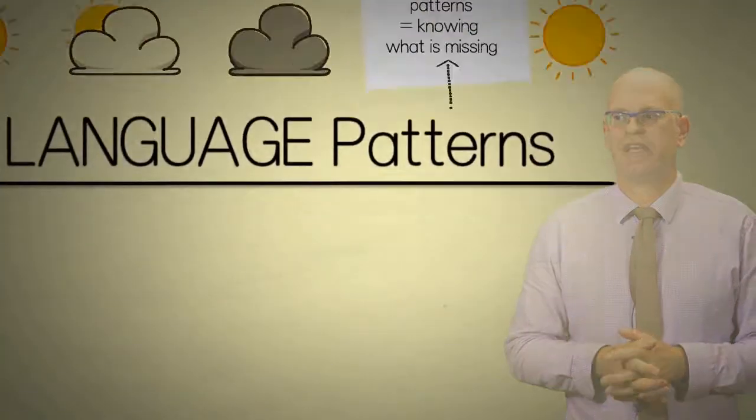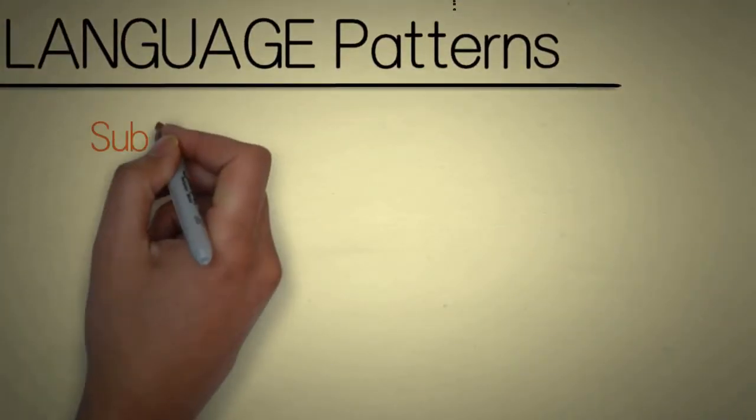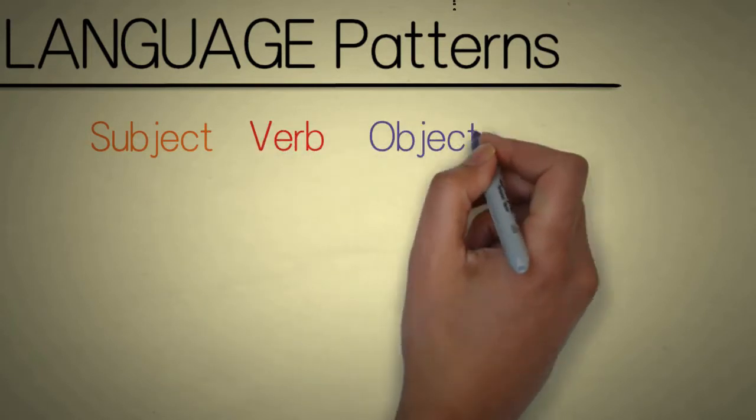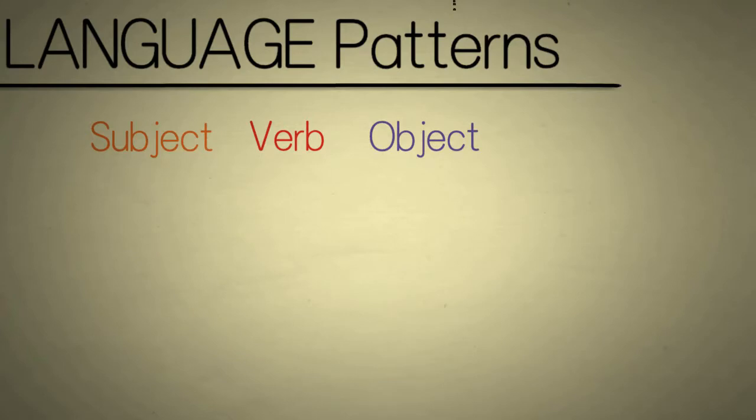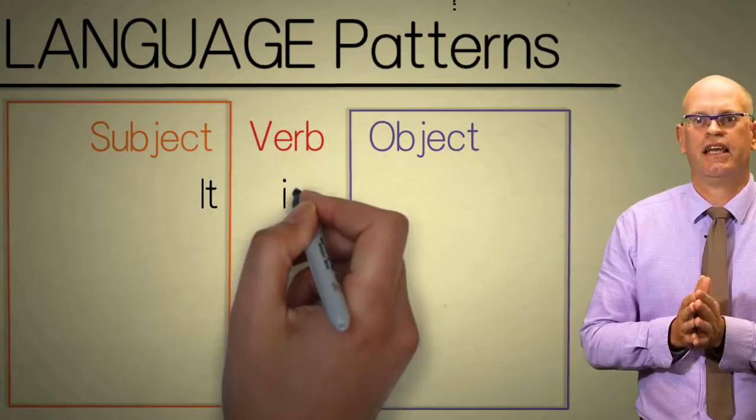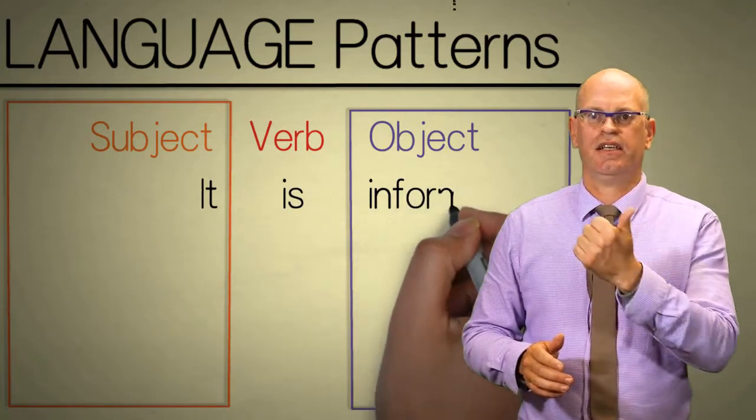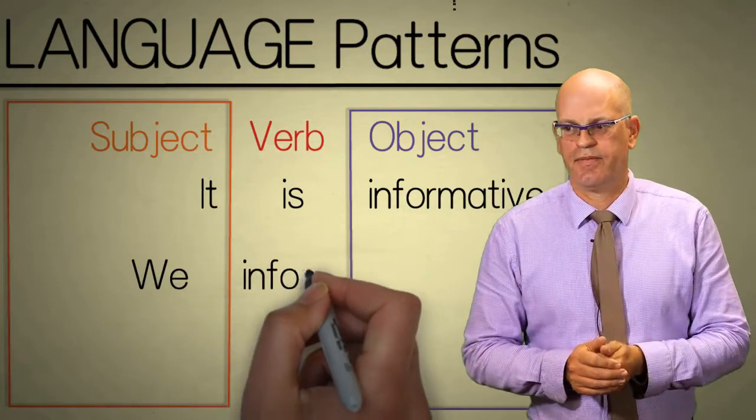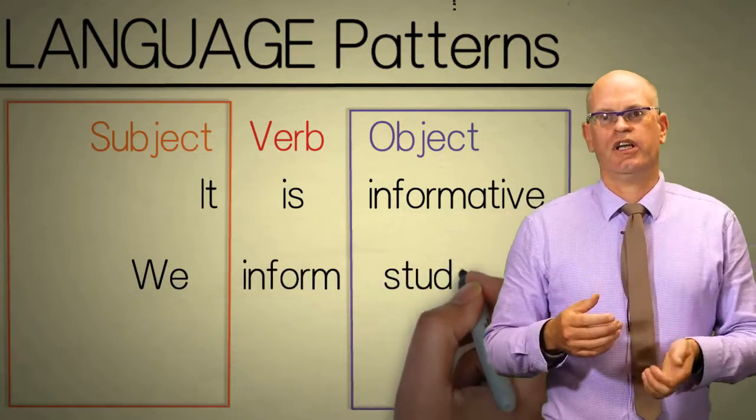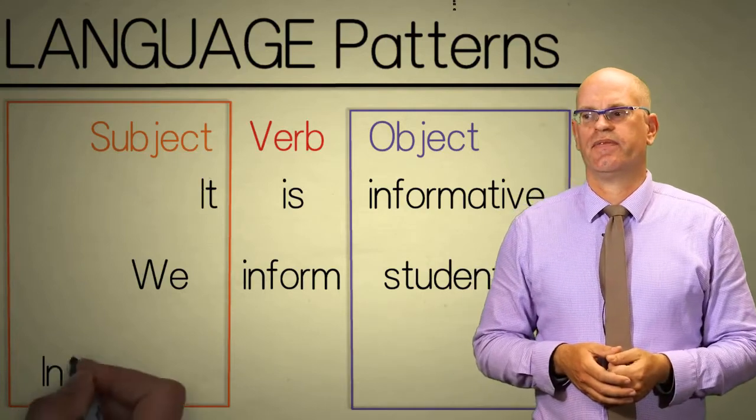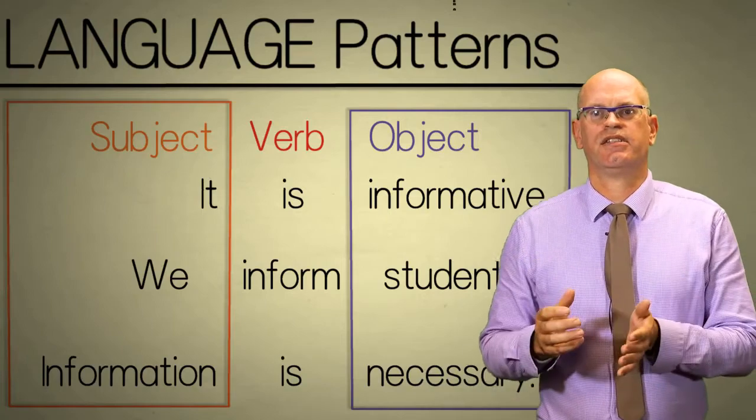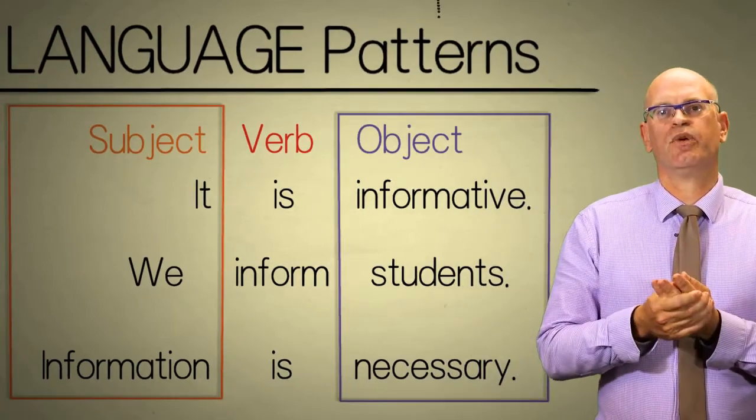Here is a nice simple pattern: it is informative. Here's another pattern: we inform students. And here's a third pattern: information is necessary. So these are three nice ways that you can use different word forms and three very small, short, simple patterns.